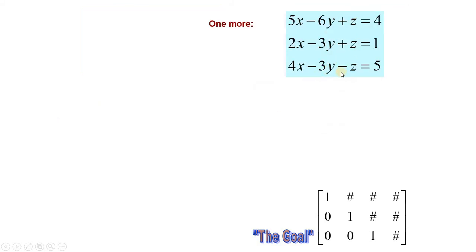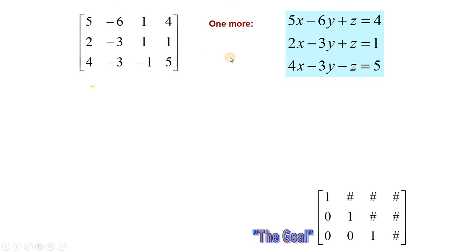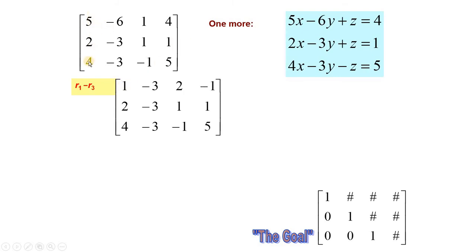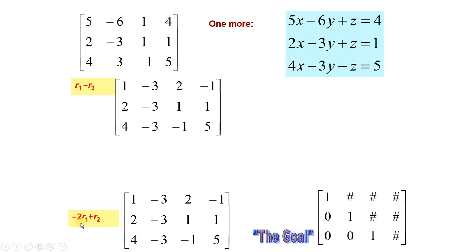Now here is another question. We write its augmented matrix and convert it to row echelon form. To make this 5 equal to 1, we use R1 minus R3, which gives 1 here: 5 minus 4 is equal to 1, minus x plus 3 is equal to minus 3, 1 plus 1 is equal to 2, 4 minus 5 is equal to minus 1. Now to make this 2 equal to 0, we use R2 minus 2 times R1, and R3 minus 4 times R1 gives 0 here as well.